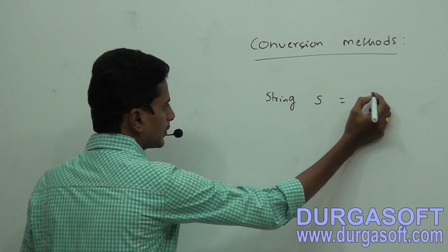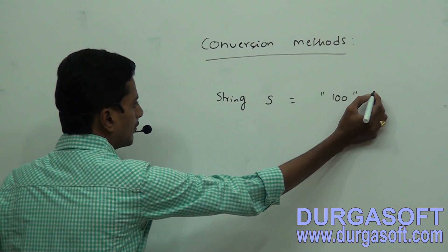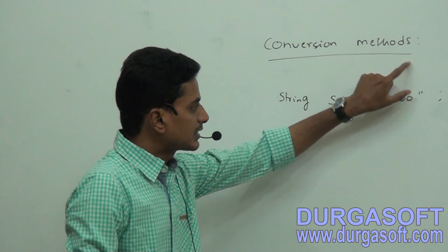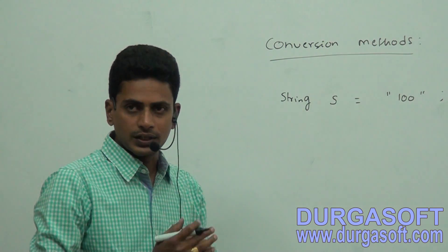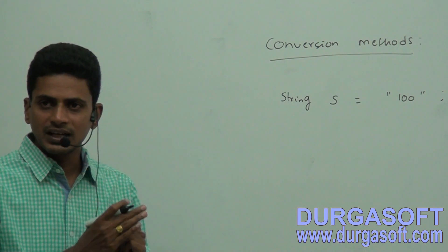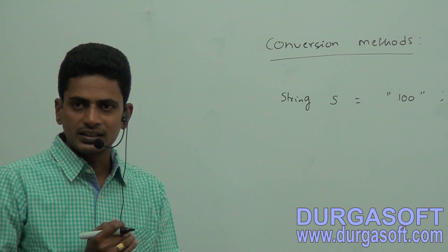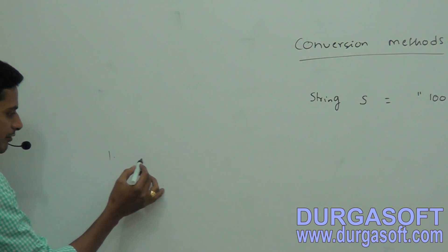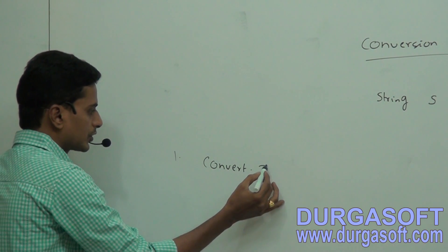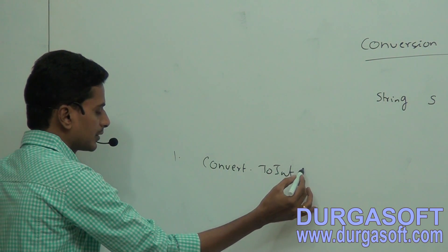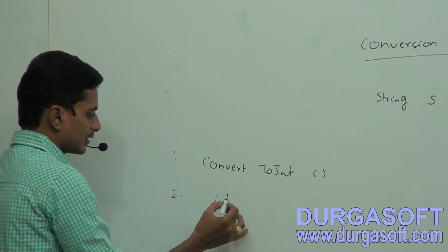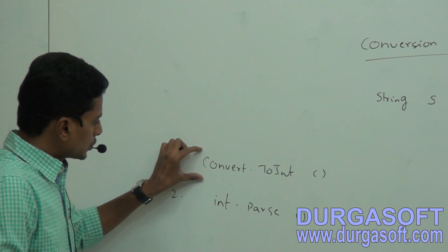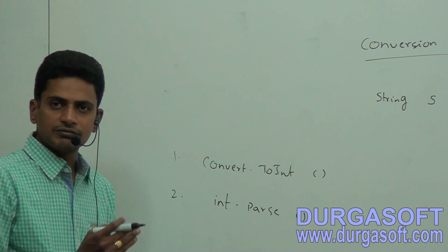For example, string s equals '100' — when I keep any value inside double quotes it is called a string value. I would like to convert this string value into an integer. To convert from string to integer in C# .NET there are two conversion methods: the first one is Convert.ToInt32, and the second one is int.Parse.